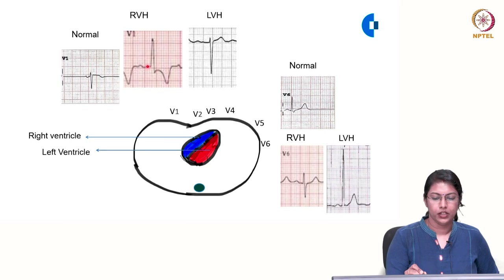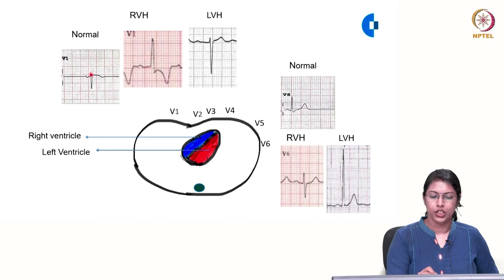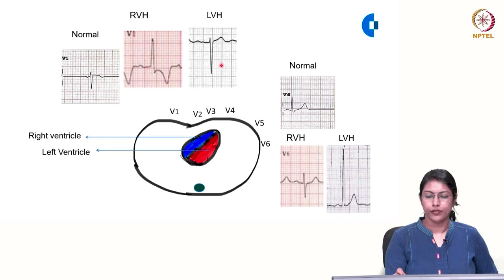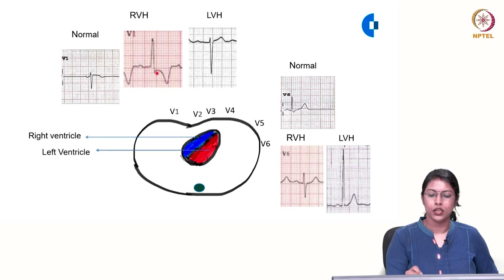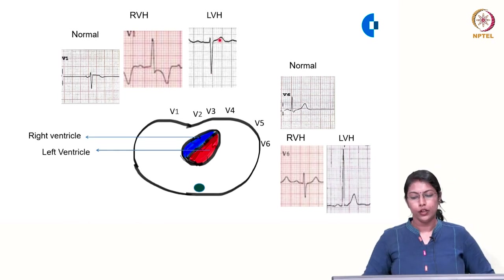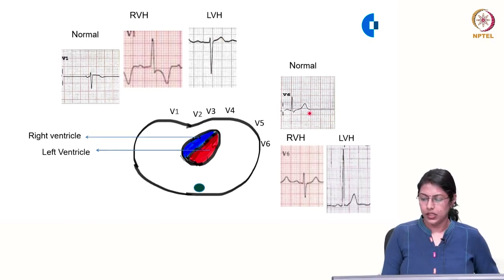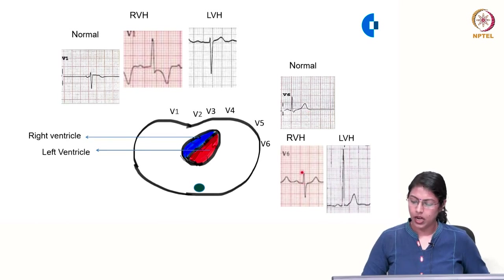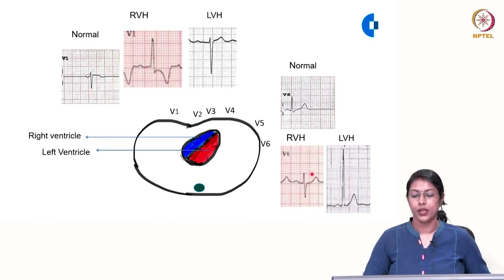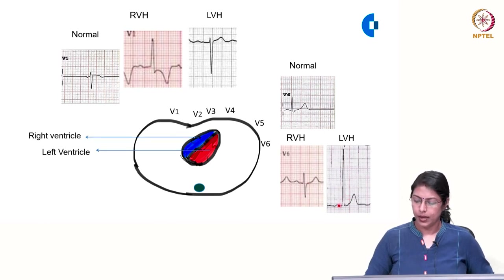In the precordial leads in right ventricular hypertrophy, V1 will show a tall r wave and a small s wave — the initial R contributed by the right ventricle. Comparing with left ventricular hypertrophy: in RVH you get a tall r small s in V1, whereas in LVH you get a small r deep S in V1. In V6, in RVH you get an R wave contributed by the left ventricle and a deeper S wave contributed by the right ventricle, whereas in LVH you get a tall R wave in V6.